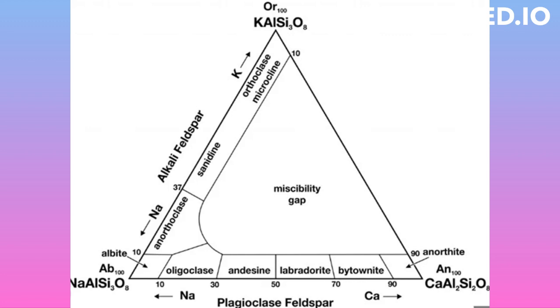Orthoclase and microcline will be found in plutonic igneous rocks and in metamorphic rocks. In addition, in the plutonic rock types, if the cooling takes place slowly enough, then perthitic exsolution lamellae may also form.